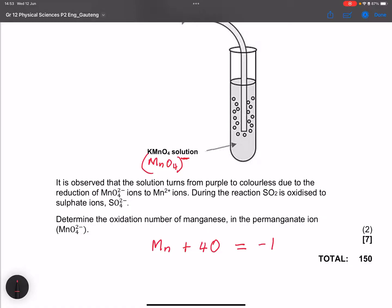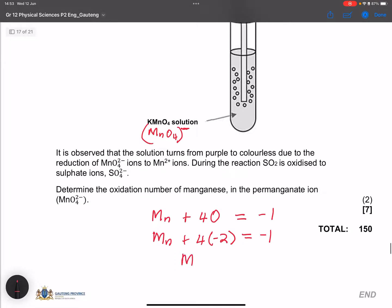So what does that say to us? It gives us negative one. So that means if I take my permanganate ion, whatever the oxidation state of it is, plus four times, remember, oxygen I said is negative two. This would give me negative one. So to get the oxidation number, four times negative two will give me negative eight. If I bring it to the other side, negative one plus eight would give me positive seven.